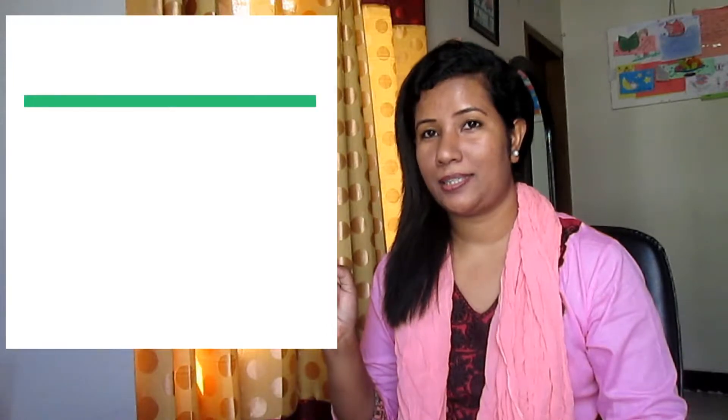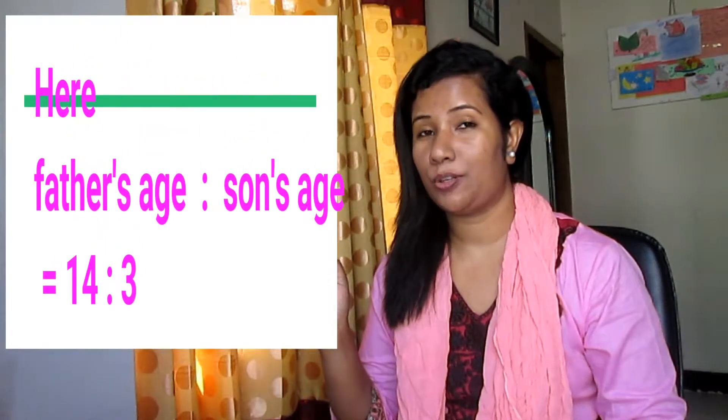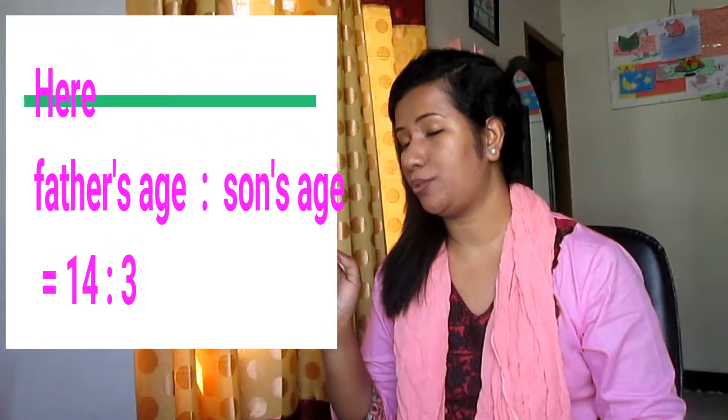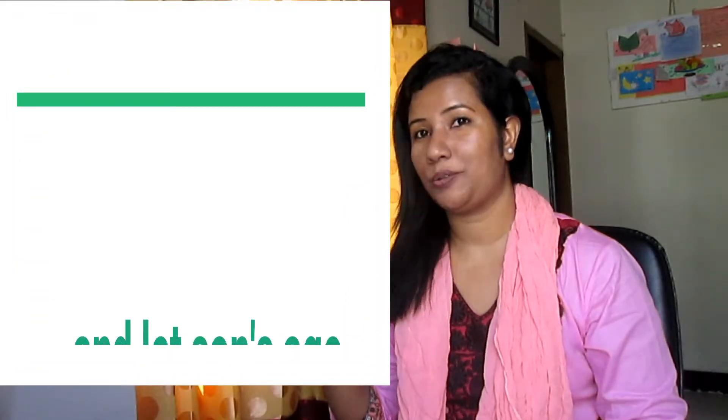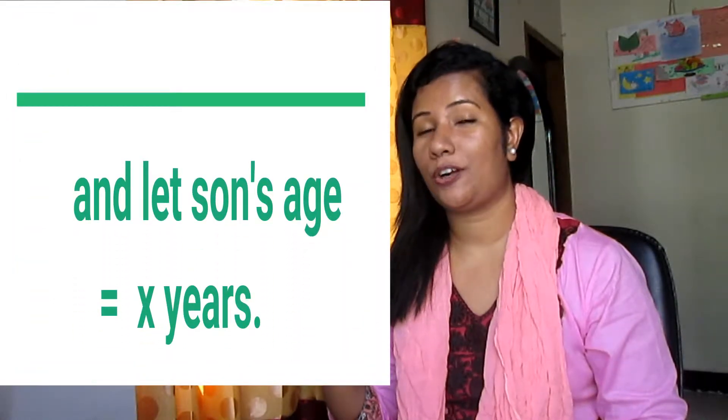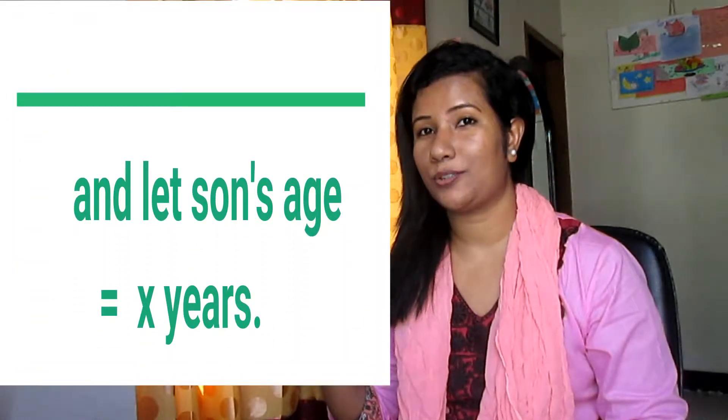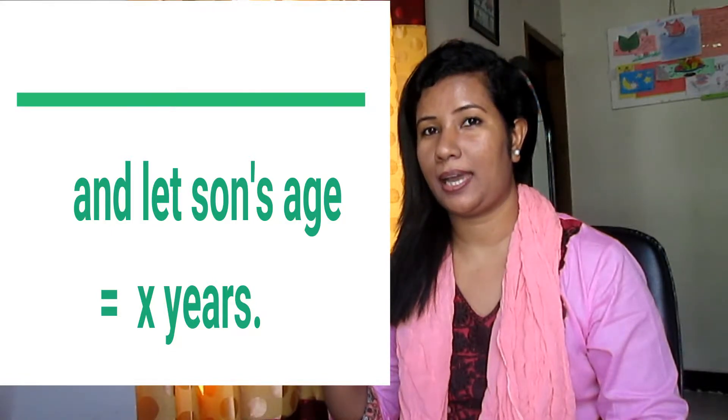So, father's age to son's age equals 14 to 3. Let son's age be x years. So we have 14 to 3 equal to 56 to x.